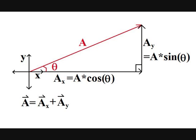The magnitude of A sub y is simply A times sine of theta. Now that we have identified both the magnitude and direction of the vectors A sub x and A sub y, we call them the components of vector A. So we have now broken vector A into its components. The common representation of component vectors comes from the property that a scalar multiplied by a vector does not change the direction, but only the magnitude. The component A sub x can be thought of as the scalar magnitude of A sub x multiplied by a unit vector in the x direction. The custom is to call the x unit vector x-hat and the y unit vector y-hat.